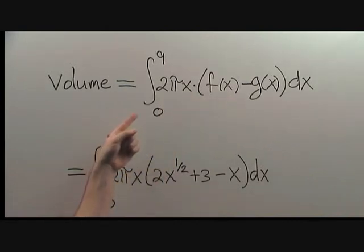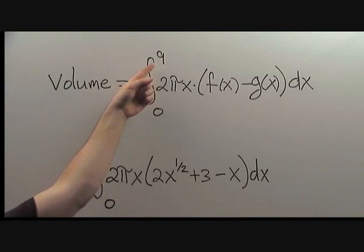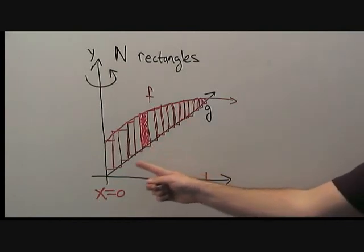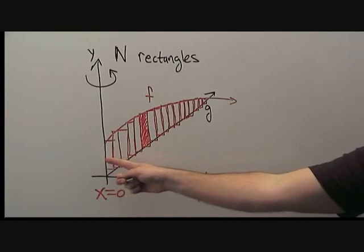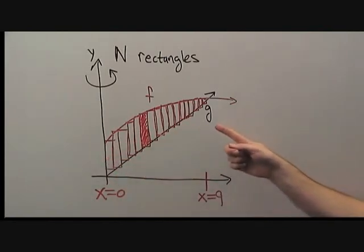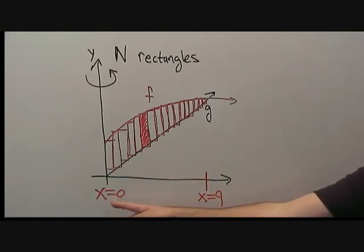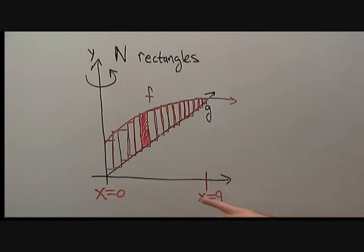Where do we get the lower limit and the upper limit of integration? To figure this out, we go back to our sketch with all the little rectangles. We need to move this rectangle from the leftmost part of the region to the rightmost part of the region. The leftmost x-coordinate we encounter is x = 0. That is the lower limit of integration. The rightmost x-coordinate that we encounter is x = 9. That is the upper limit of integration.